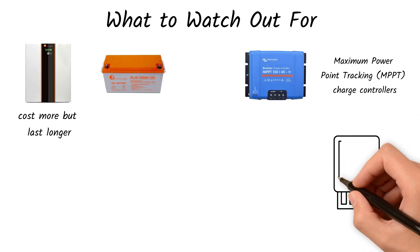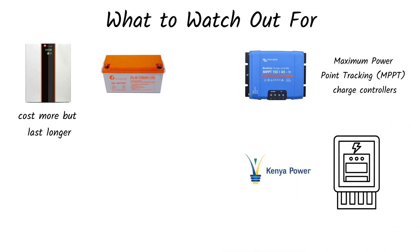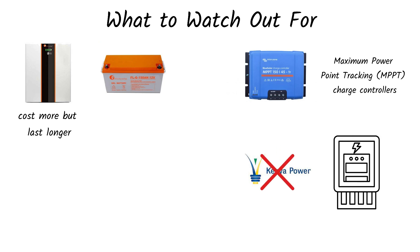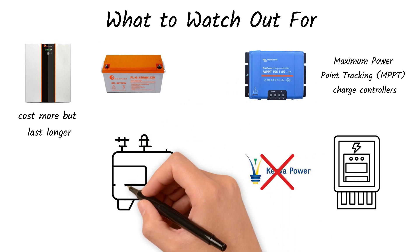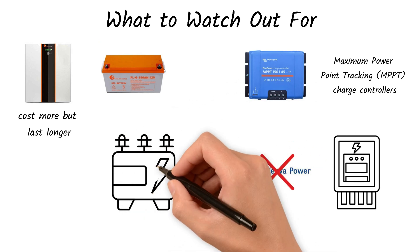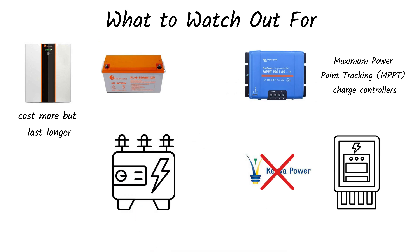Off-grid systems don't benefit from net metering. Without a KPLC connection, you can't sell surplus power back to the grid. And lastly, install a backup generator to ensure power supply during extended rainy seasons. Careful planning at this stage will prevent headaches down the road.